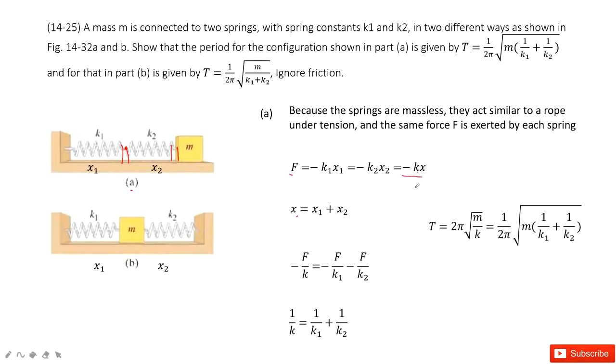F can be canceled and we get the spring constant for this combined spring. Then its period can be found using this function. When we input k, we get a function that looks like this.